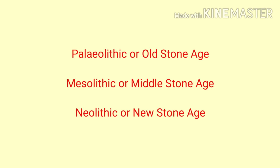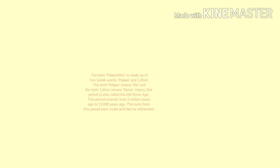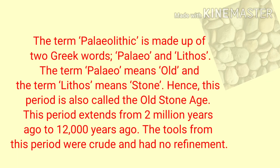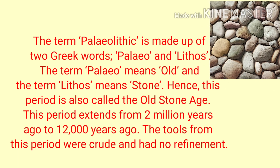The three phases are: A. Paleolithic or Old Stone Age, B. Mesolithic or Middle Stone Age, C. Neolithic or New Stone Age. The term Paleolithic is made up of two Greek words — paleo and lithos. Paleo means old and lithos means stone. Hence, this period is also called the Old Stone Age.